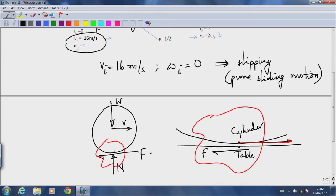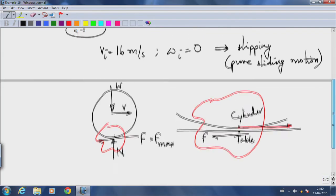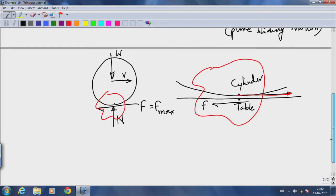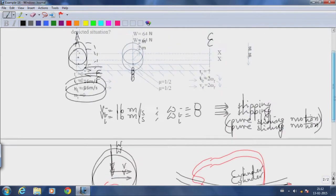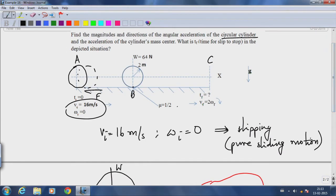Not just that, we know that this would have to equal F_max because there is relative motion. Friction acts in its fullest strength to cause relative motion to cease. In this particular problem, F_max equals mu times N.